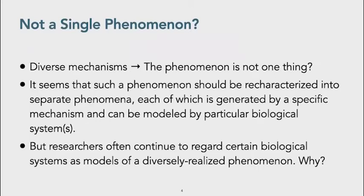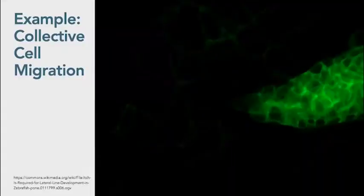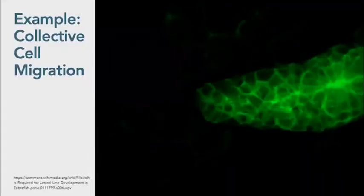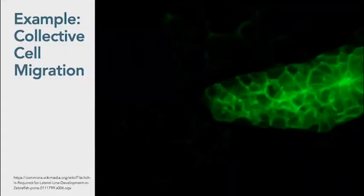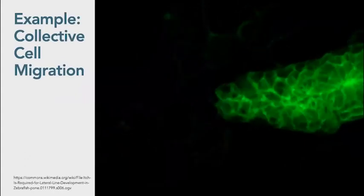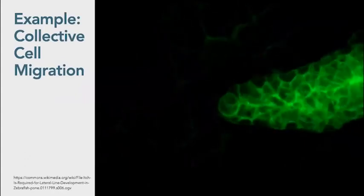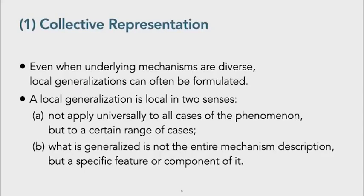Nevertheless, biologists often continue to regard certain biological systems as models of a diversely realized phenomenon. Why? In the manuscript, I tackle this question by examining how the phenomenon of collective cell migration is studied in developmental biology.